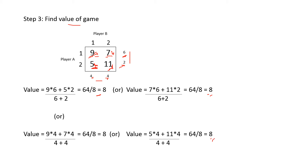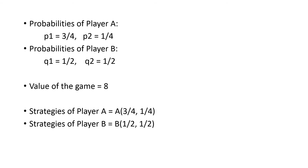In this game, the value of the game is 8. Probabilities of player A: P1 = 3/4 and P2 = 1/4. For player B: Q1 = 1/2 and Q2 = 1/2. This is how, for a mixed strategy game, we find the value of the game, strategies, and probabilities. Hope it was clear. Thank you.